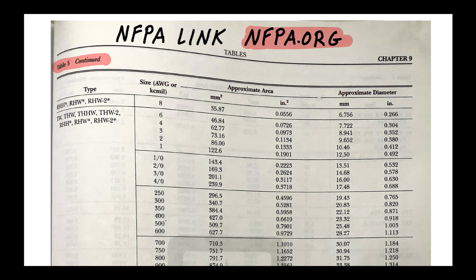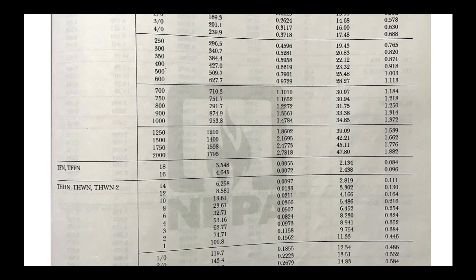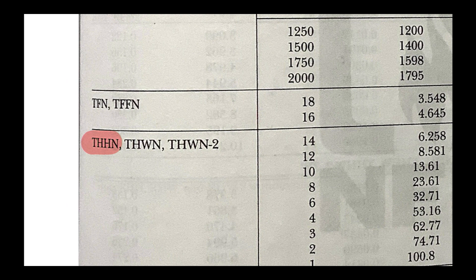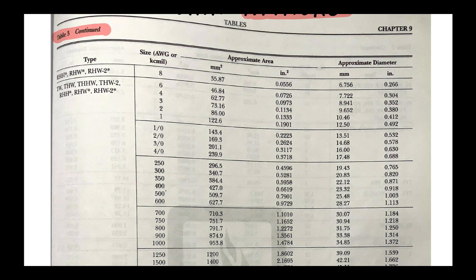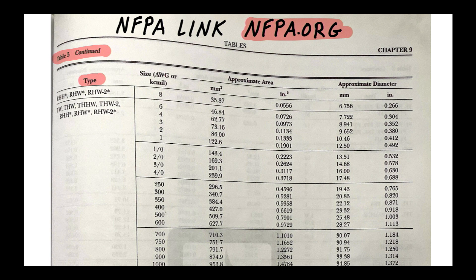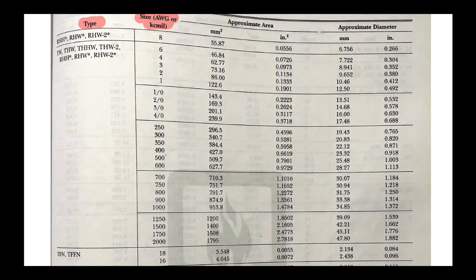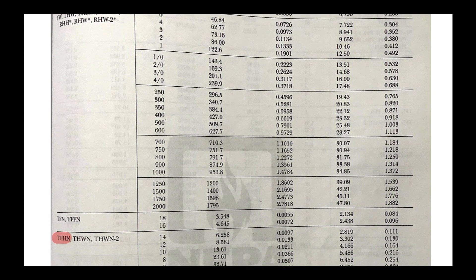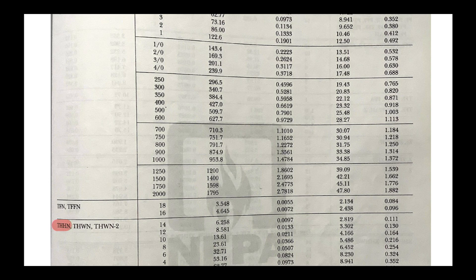Table 5 in Chapter 9 is called 'Dimensions of Insulated Conductors and Fixture Wires.' We were told the conductor we're looking for is THHN, so we find that in the first column under 'Type.' The next thing we look for is the size — we find THHN and then 10 AWG.